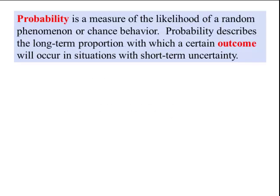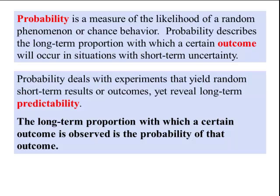Lesson objective number one. Probability is the measure of the likelihood of a random phenomenon or chance behavior. Probability describes the long-term proportion in which a certain outcome will occur in situations with short-term uncertainty. Probability deals with experiments that yield random short-term results or outcomes, yet reveal long-term predictability.